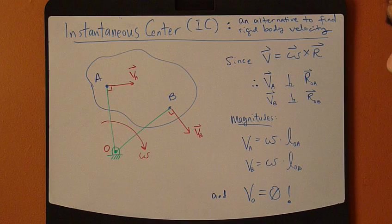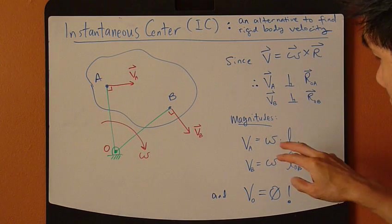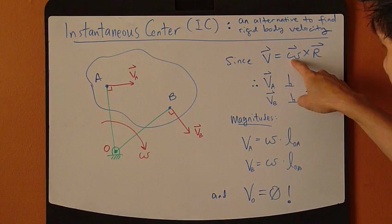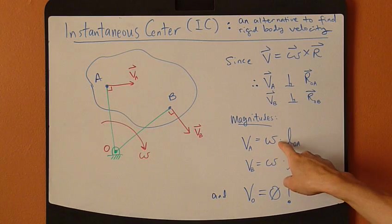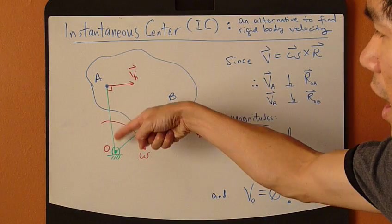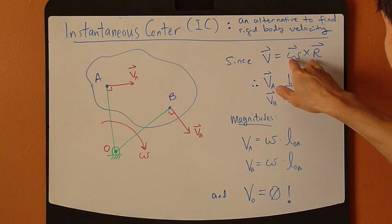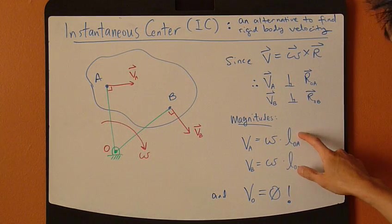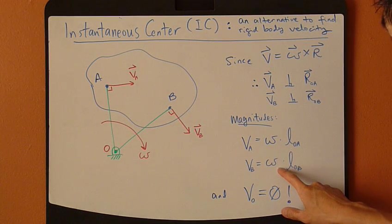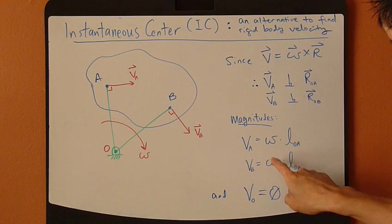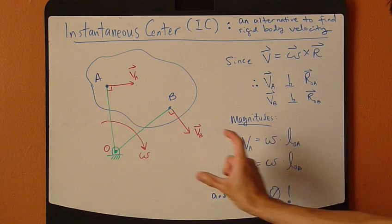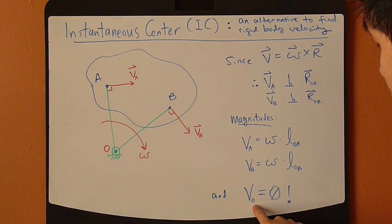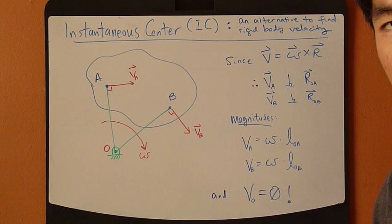Now, as far as the magnitude goes, velocity of A simply equals to the magnitude of omega multiplied by the length of OA. That's all. So this cross product reduces down to this simple relationship. And for B, same thing, velocity of B equals magnitude of omega times length OB. And recognize that velocity of O is zero.